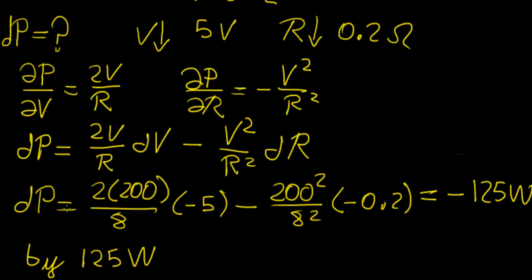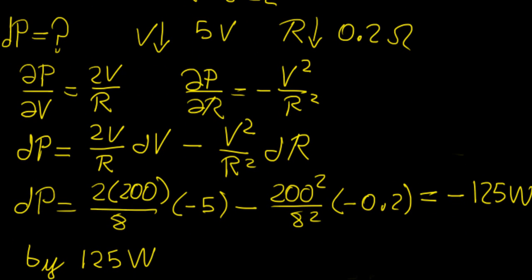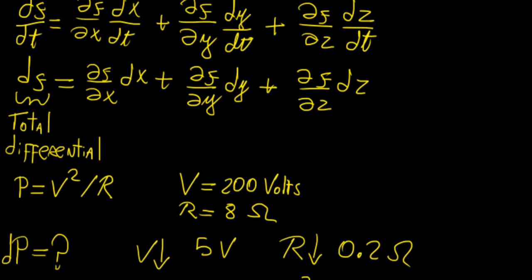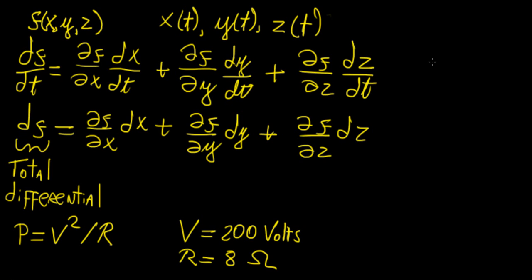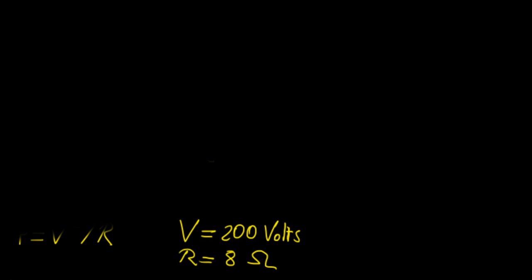So that means our power in this occasion is going to decrease by 125 watts given this change in voltage and resistance. That's a really useful thing to work with. Another application of total differentials is finding the total error or uncertainty in measurements for a function of several variables. So if we're measuring something like the surface area of a three-dimensional object, we need to account for the uncertainty in each of those measurements. Total differentials are a good way of estimating the amount of error in our measurements as a whole.